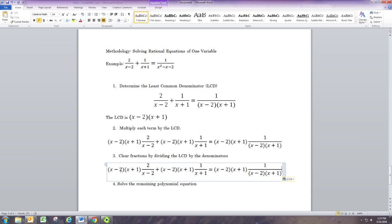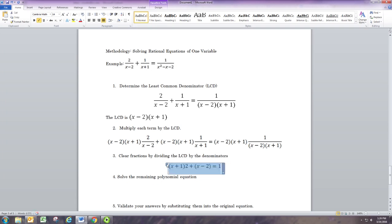Let's look at how the clearing fractions works here. We take the LCD, the x minus 2 times x plus 1, and divide it by the denominator. In this first fraction, x minus 2 will be divided by x minus 2 and that will go away, but the x plus 1 will still be there and that will multiply with the 2. So you're just going to have 2 times x plus 1. With the second one, the x plus 1 goes away, so you just have x minus 2. With the last one, everything goes away but the 1. So you just have a 1 there.